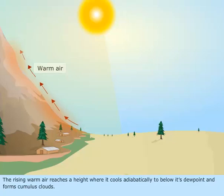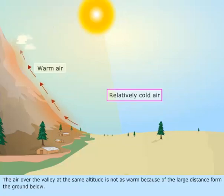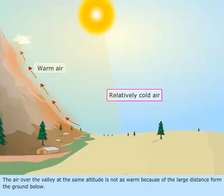The rising warm air reaches a height where it cools adiabatically to below its dew point and forms cumulus clouds. The air over the valley at the same altitude is not as warm because of the large distance from the ground below.